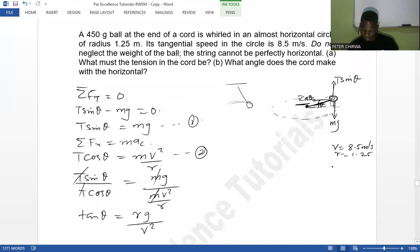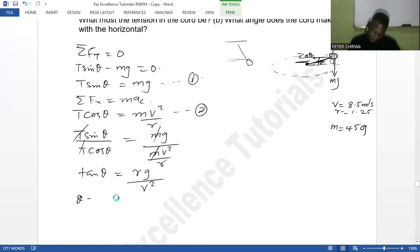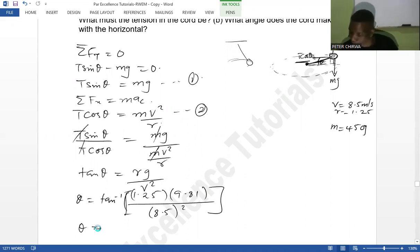Now what I'm going to have is to substitute these values. It's going to be 1.25 times 9.81 over 8.5. So my angle here is going to be the tan inverse of that, 9.63 degrees. So that is going to be my angle, 9.63 degrees.